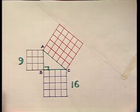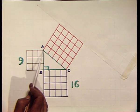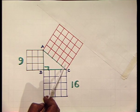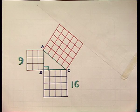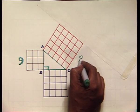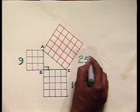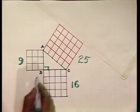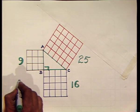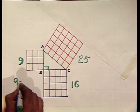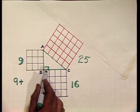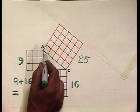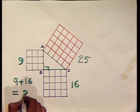On side AC we have constructed a square — 5 squares on each side — making the total 25 squares. So what do we find? The number of squares constructed on side AB, which are 9, plus the number of squares constructed on side BC, which are 16, is equal to the number of squares constructed on side AC, which is 25.